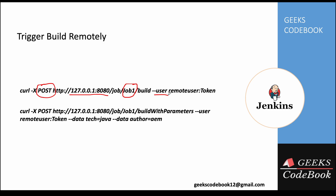For a job with parameters, you use 'buildWithParameters' and the same '--user' flag with the remote user and token. To pass parameters, use '--data' for each one — for example, '--data tech=java' and '--data author=value'. You can also use '-d' as a shorthand. This is standard curl syntax.